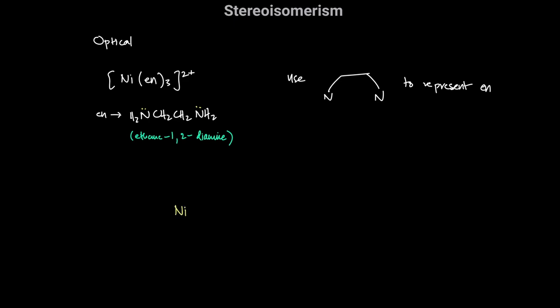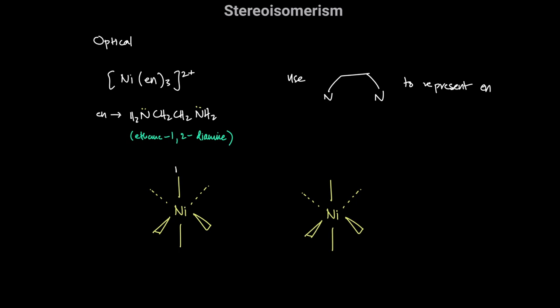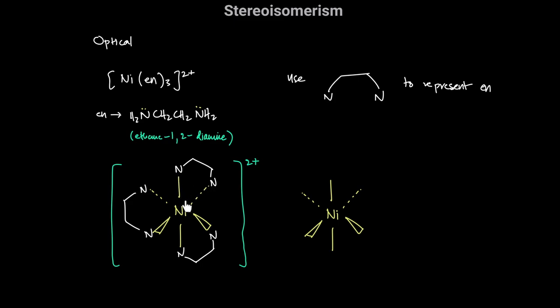For [Ni(en)3]²⁺, we show the nickel making an octahedral complex with three bidentate ligands. For the first isomer, we have three bidentate ligands bonded to the central metal ion. The mirror image of this complex is non-identical to the original — these are non-superimposable mirror images, meaning they are enantiomers.